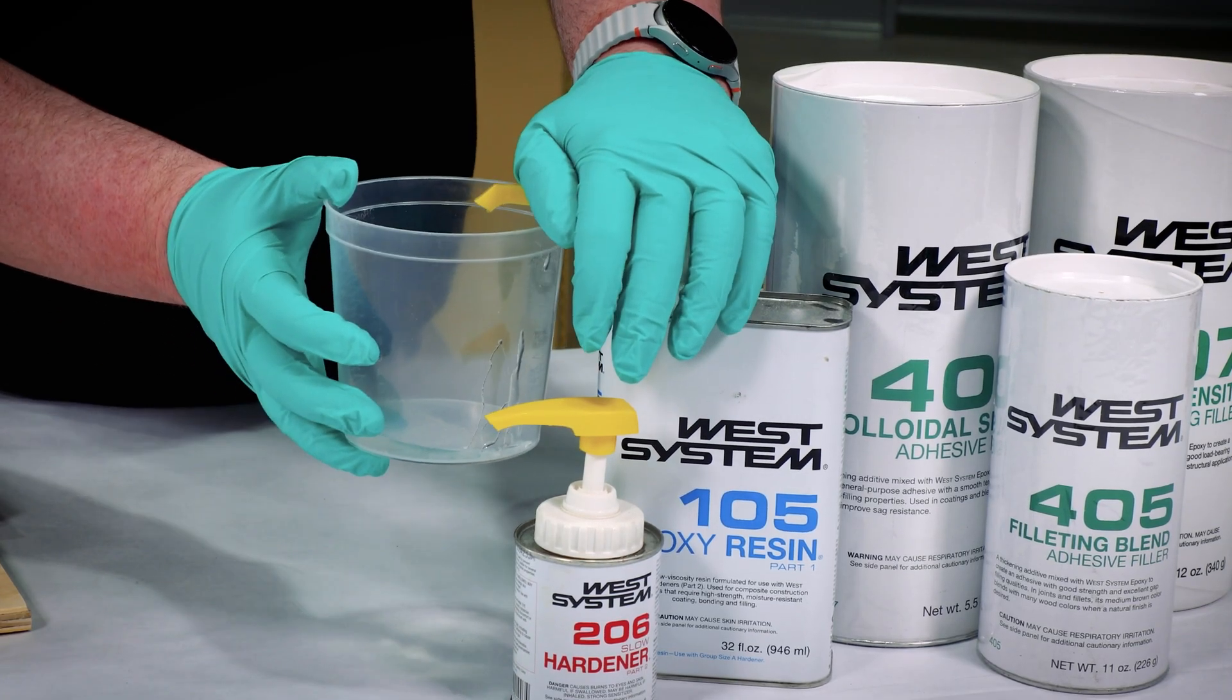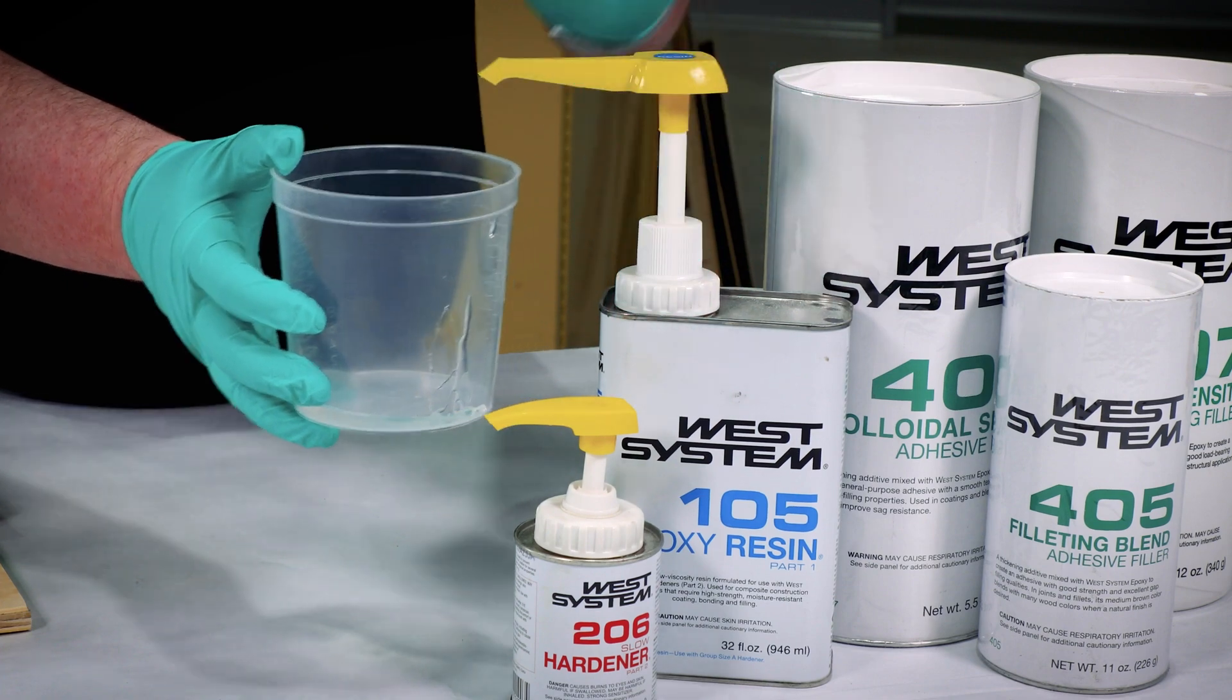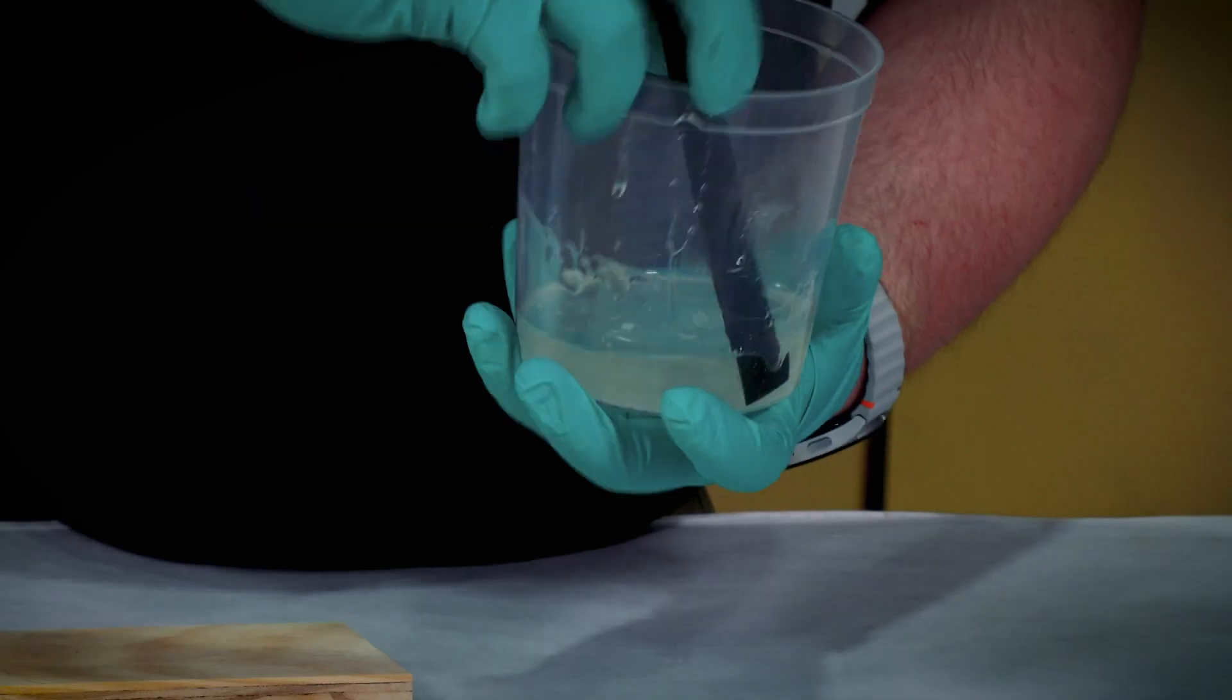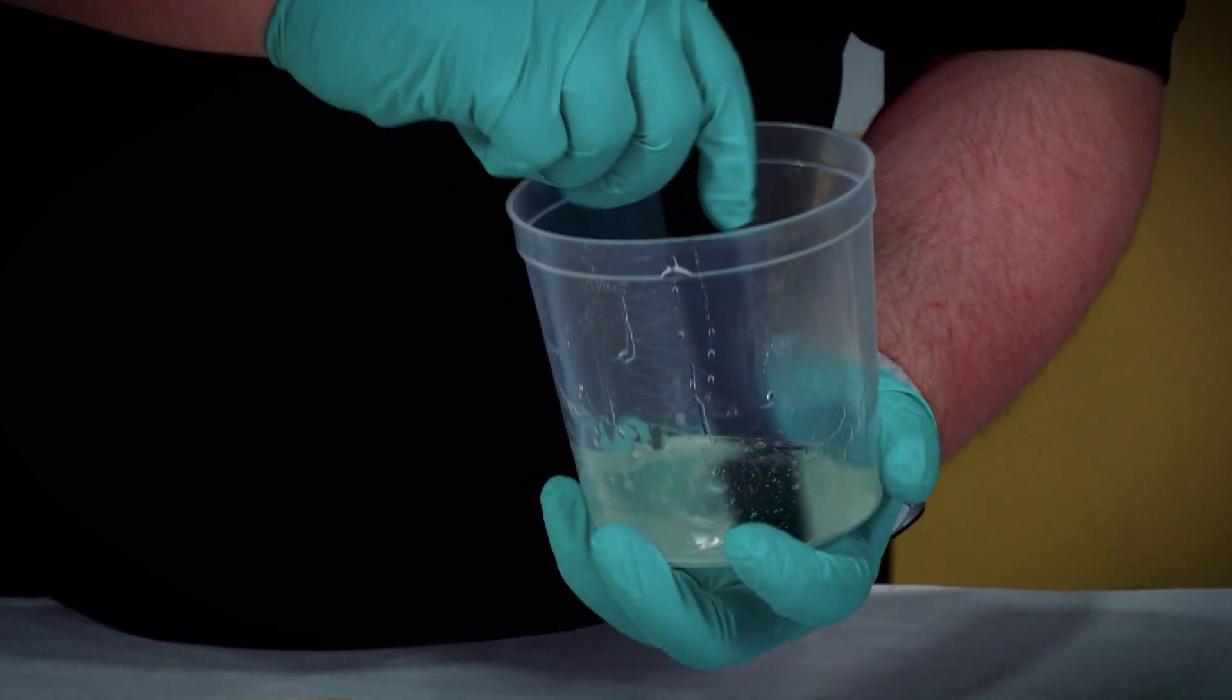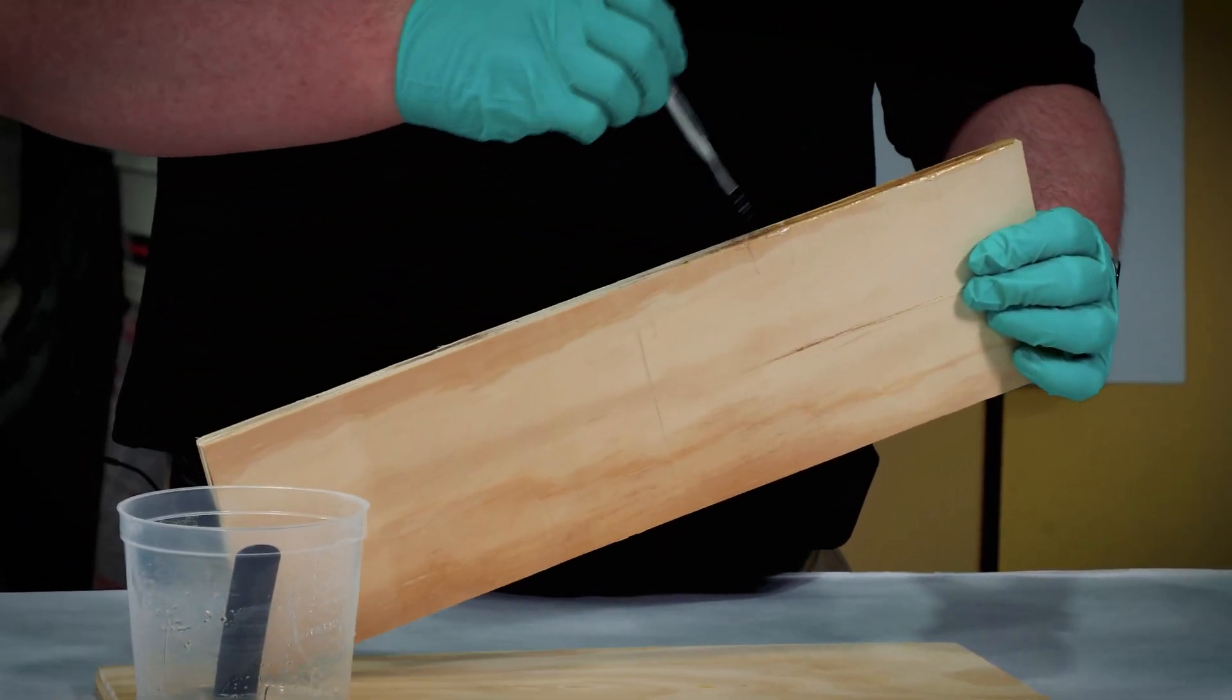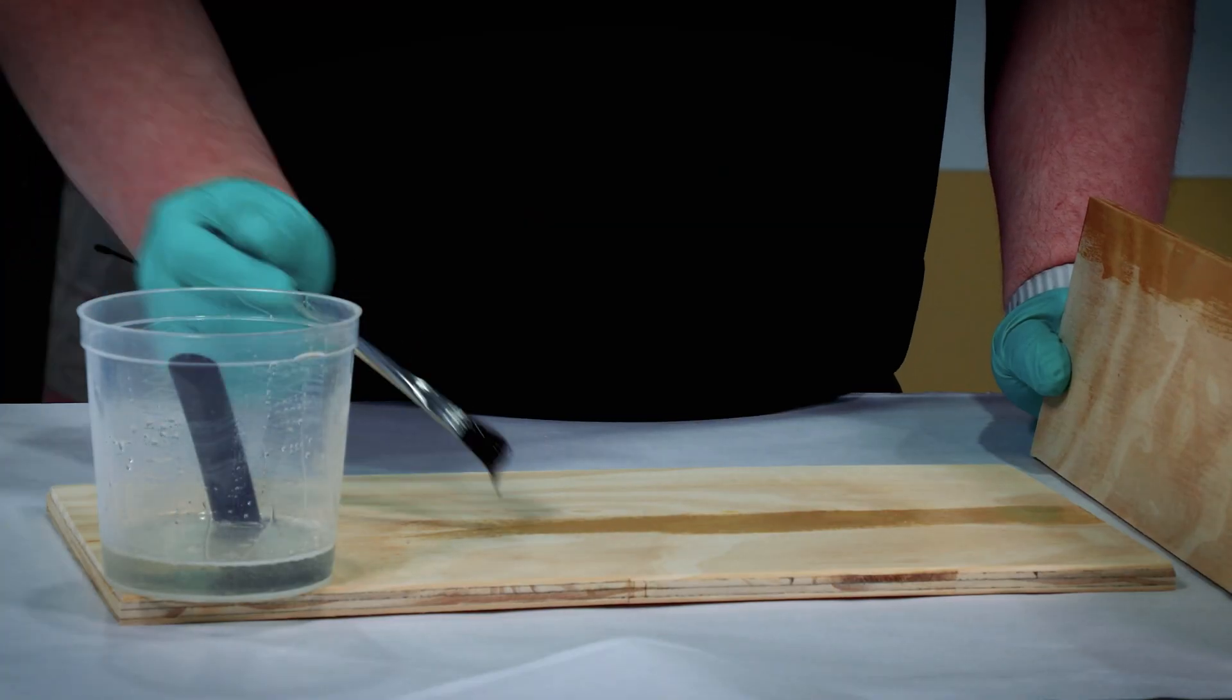So I've mixed up some 105 resin with some 206 Slow Hardener and we're going to brush that onto our wood surfaces and allow that to soak in, and then come back a little later with some thickened epoxy to fill any gaps between them.